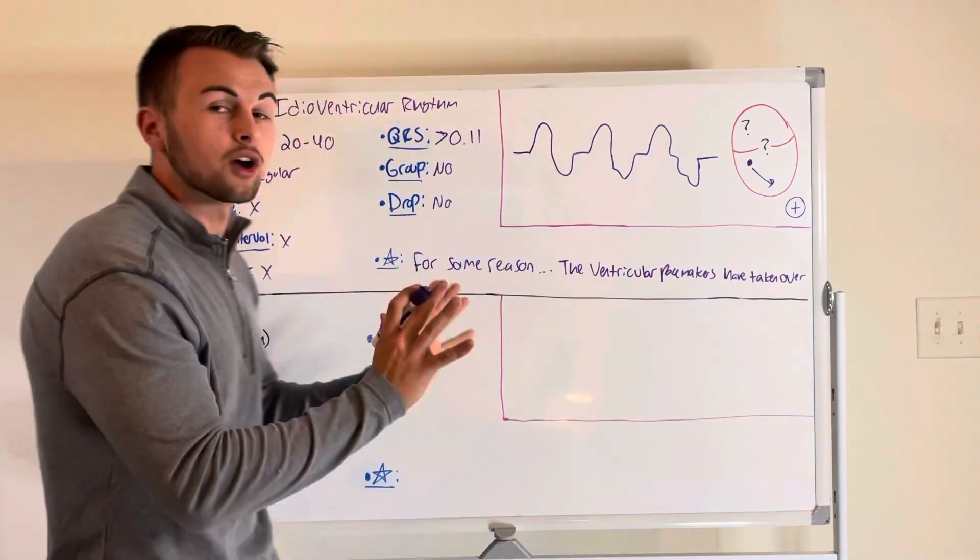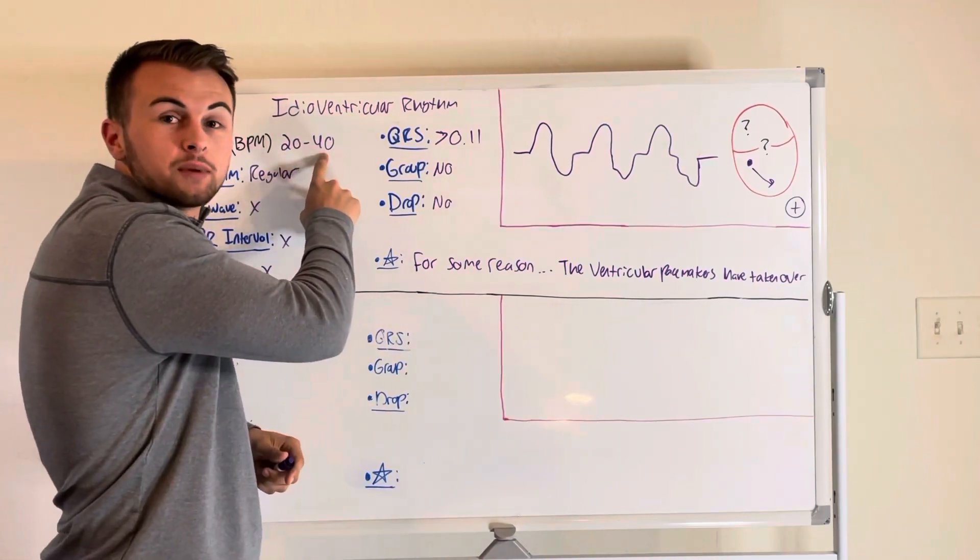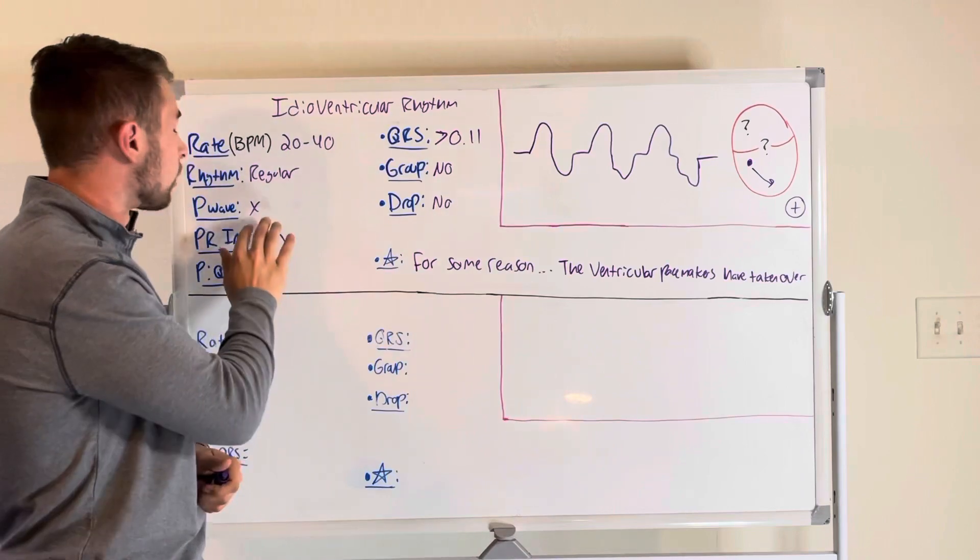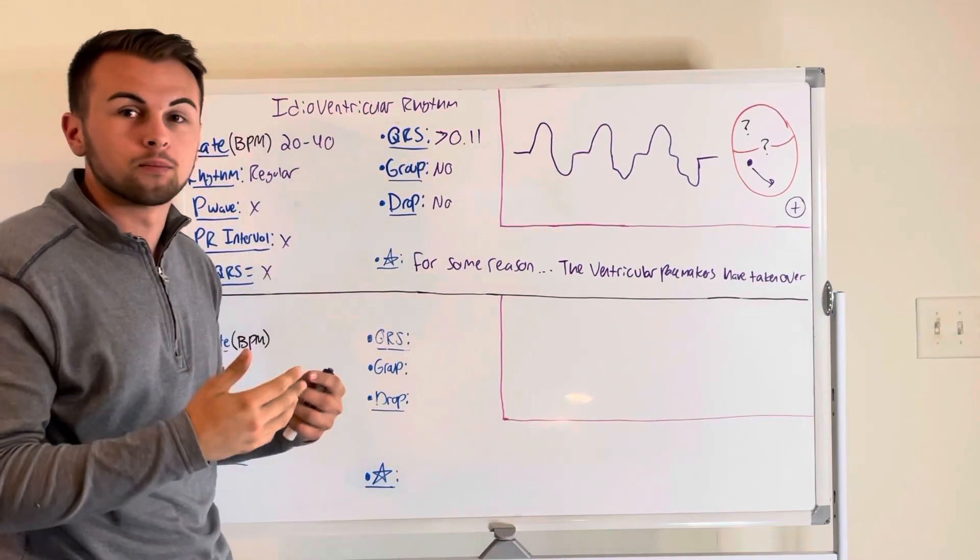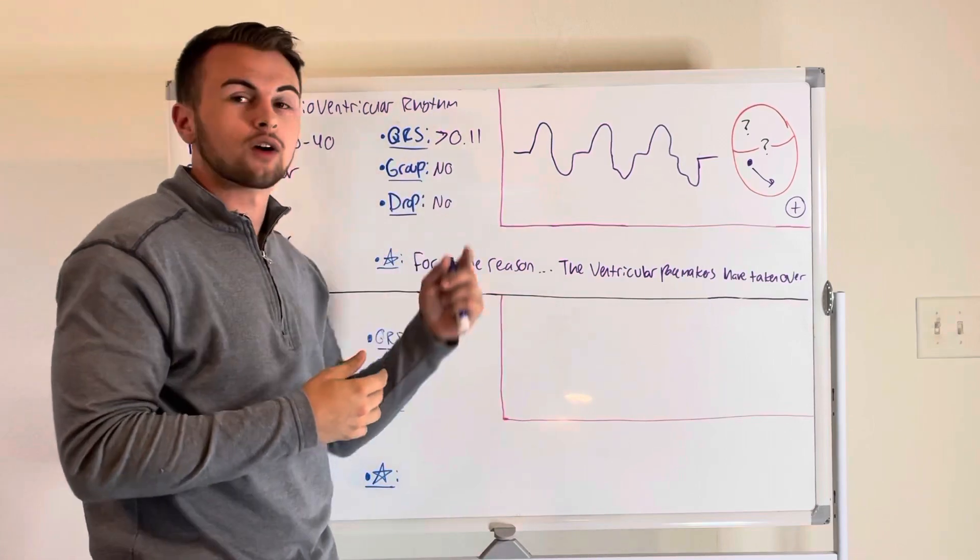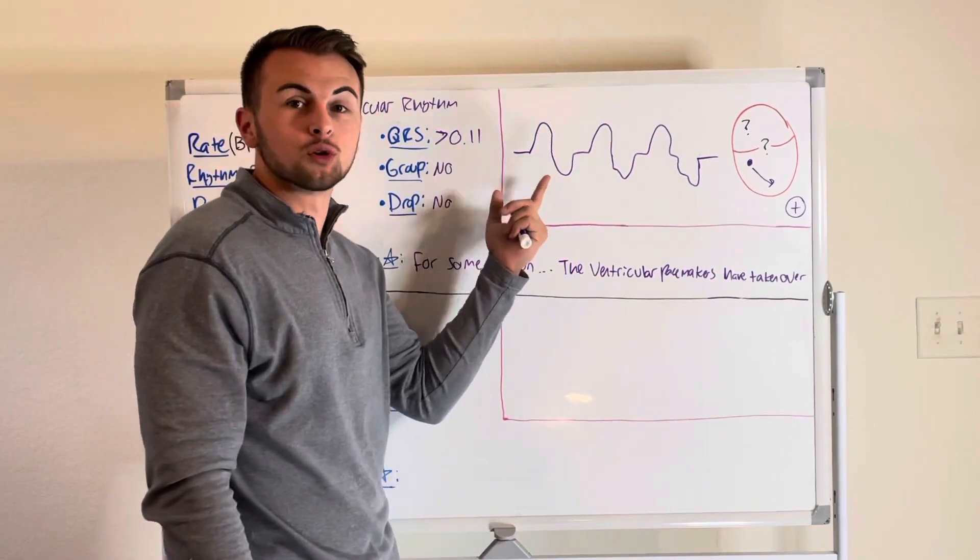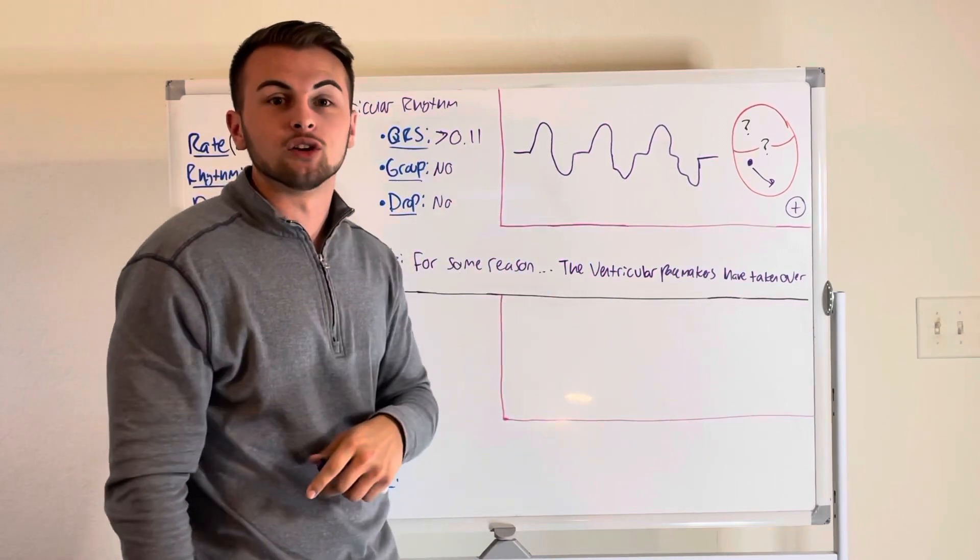Because we've seen all the other videos, we know that the rate is predictably 20 to 40 beats per minute. The rhythm is regular but it's slow. There are no P waves, no PR intervals, no P to QRS ratio, and the QRS will look wide and bizarre, likely greater than 0.11 seconds, and there are no groups and no drops.